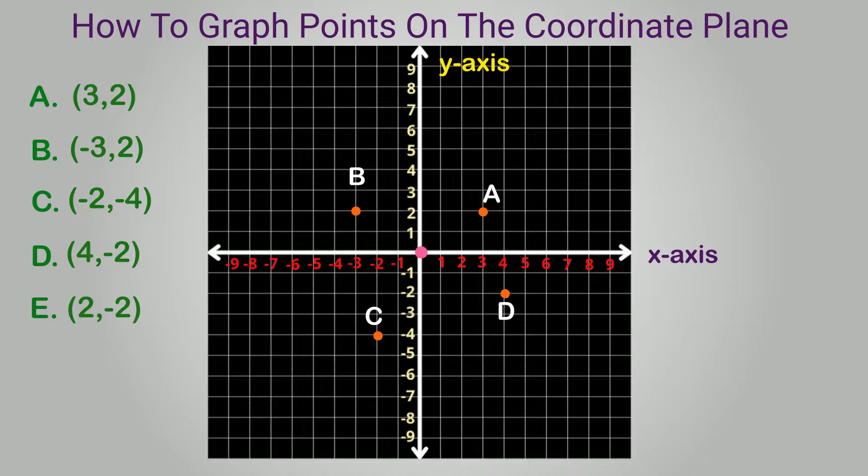Final example. Graph the coordinates 2 and negative 2. We start at the origin and move two spaces to the right. We move down two spaces, since the y value is negative. We place our point here, and see this one is also located in quadrant 4.